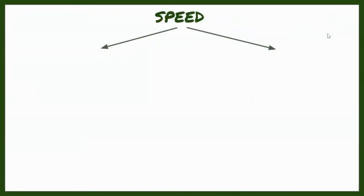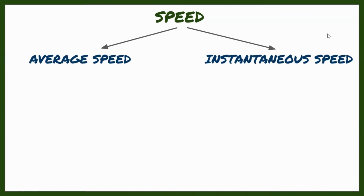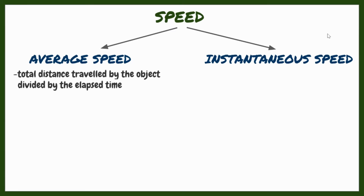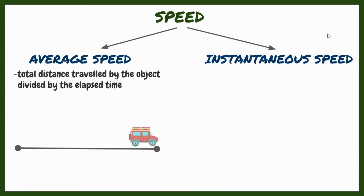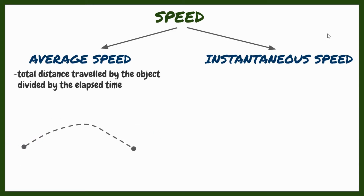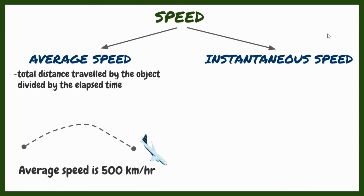There are two types of speed: average speed and instantaneous speed. Average speed of the object is the total distance traveled by the object divided by the elapsed time. For example, a car traveled 50 kilometers in one hour, or an airplane traveled 500 kilometers in one hour. It explains that it is the rate at which total distance varies with the total time taken. Distance is involved in solving the speed of a moving object, hence both of them are scalar quantities.